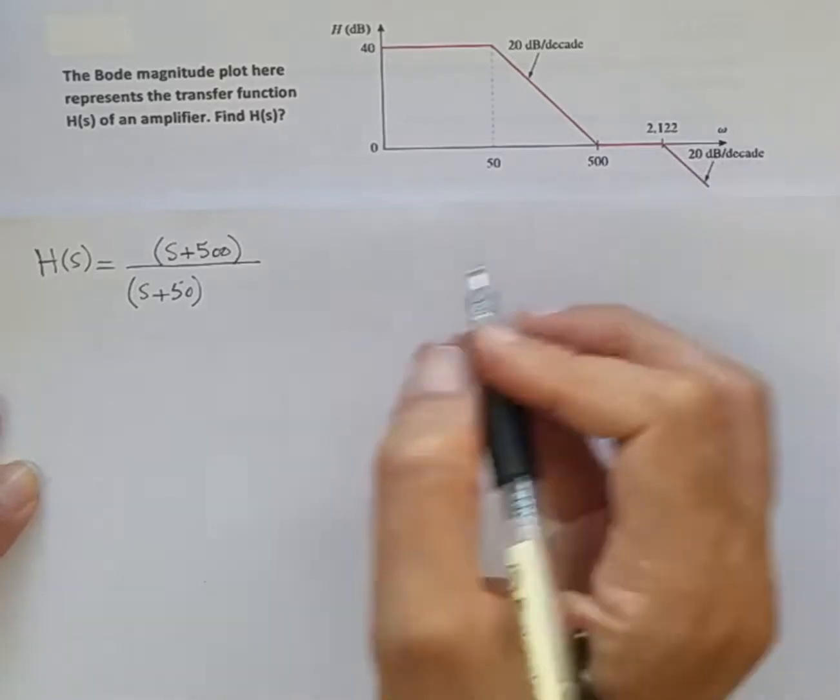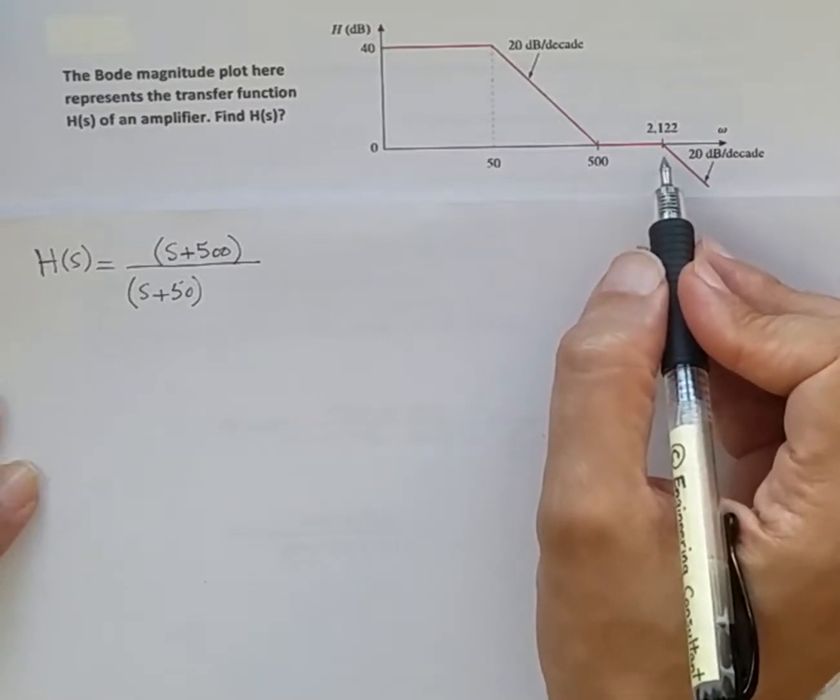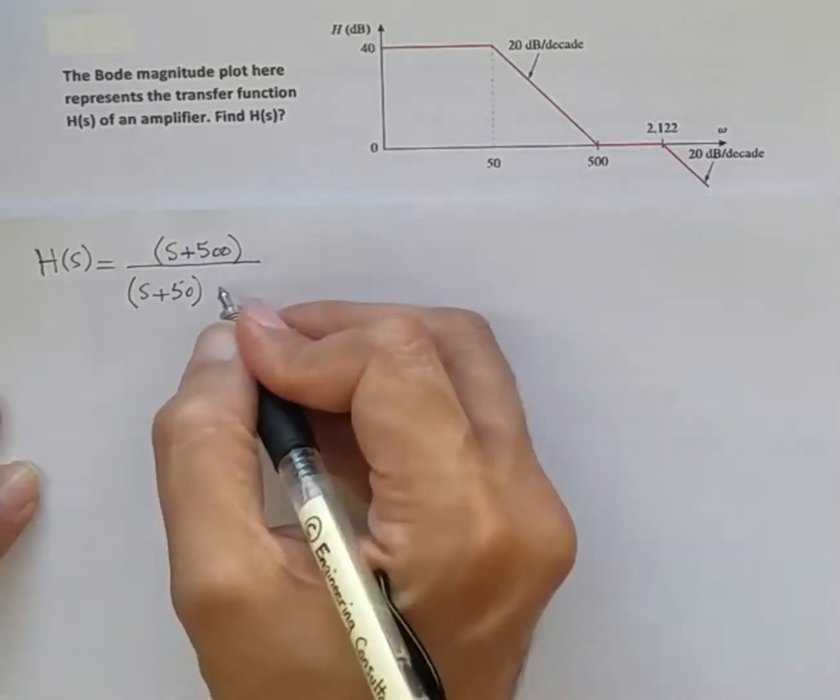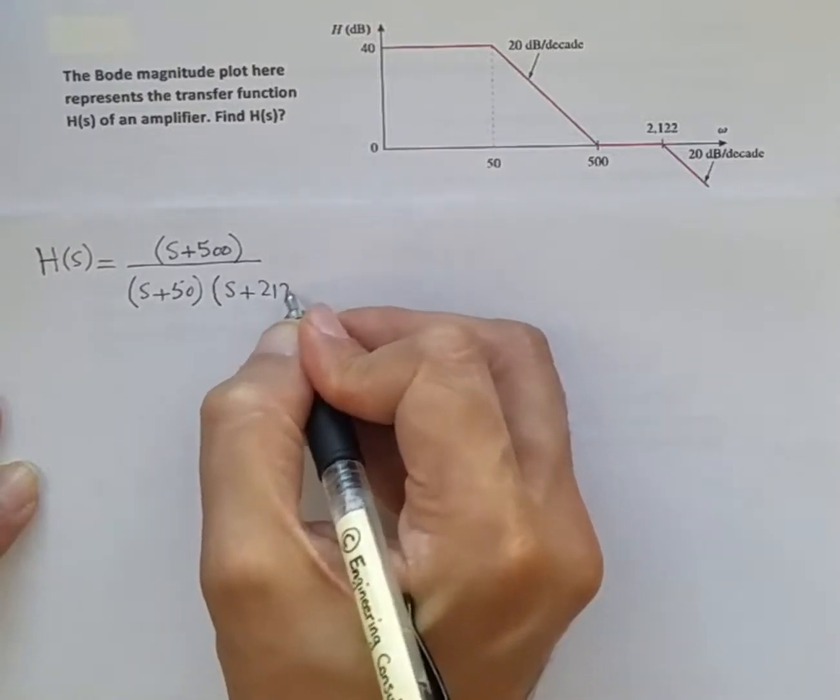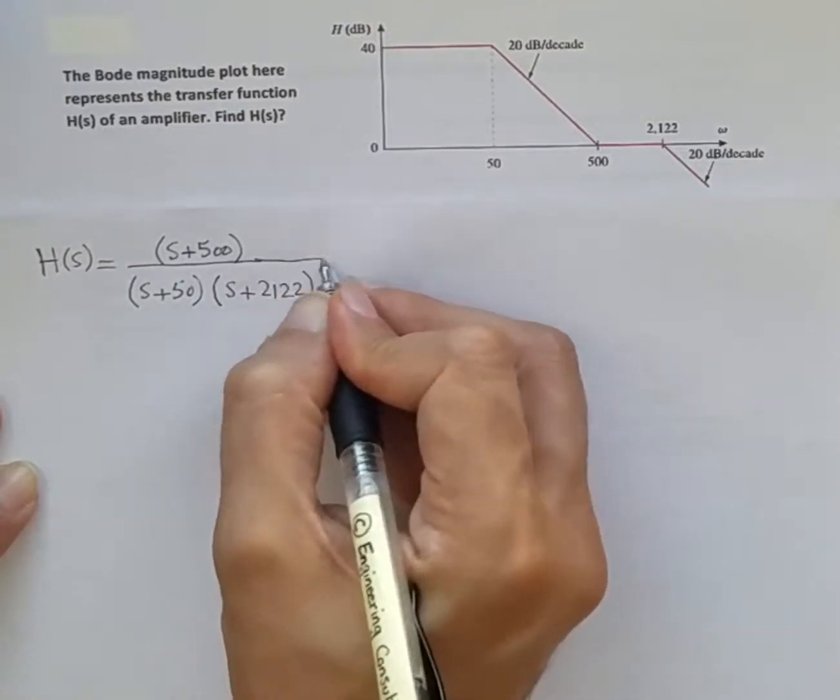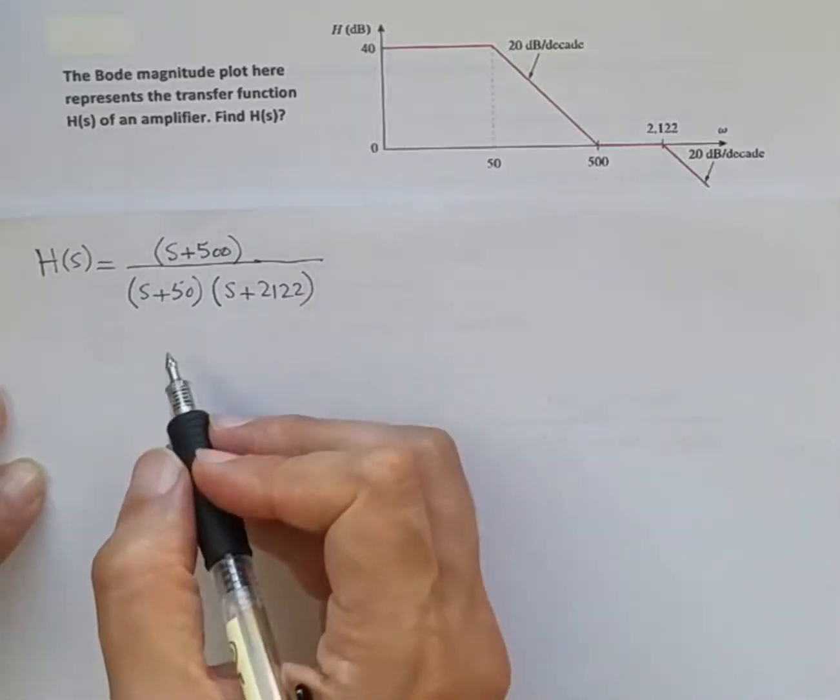That is an indication of another pole, the second pole in the system. So we have (s + 2122) component in the denominator as well.